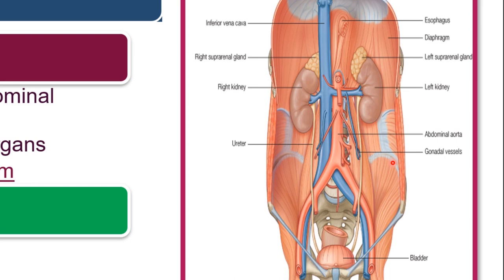Posteriorly, we see other structures. The posterior boundaries will be the lumbar vertebrae with the muscles covering these regions. Here we're seeing some of the muscles — psoas major and the rest of the muscles and fascia. So posteriorly we'll be looking at the lumbar vertebrae, the muscles lining this region, and the fascia wrapping the muscles.